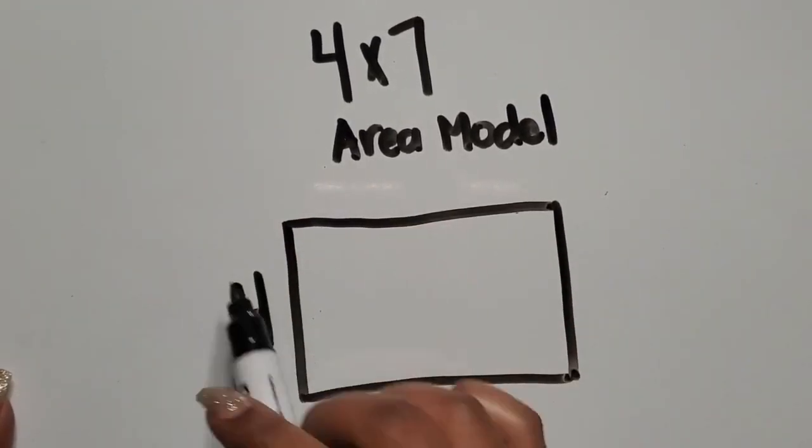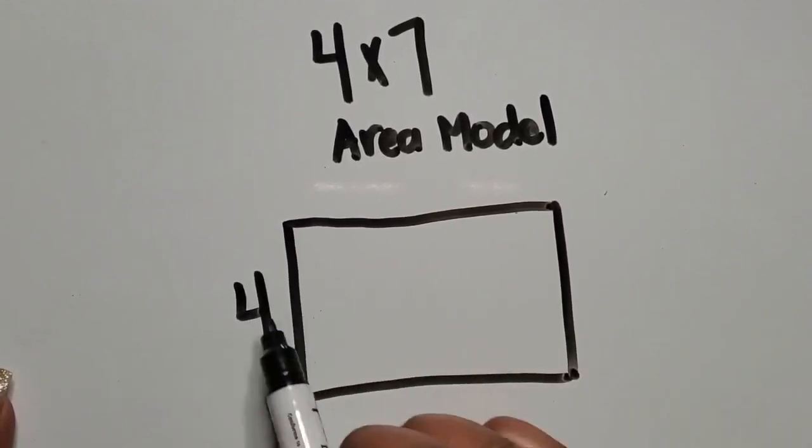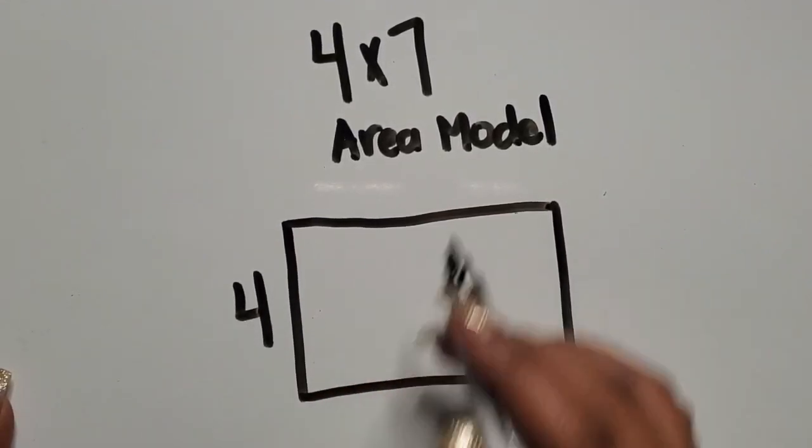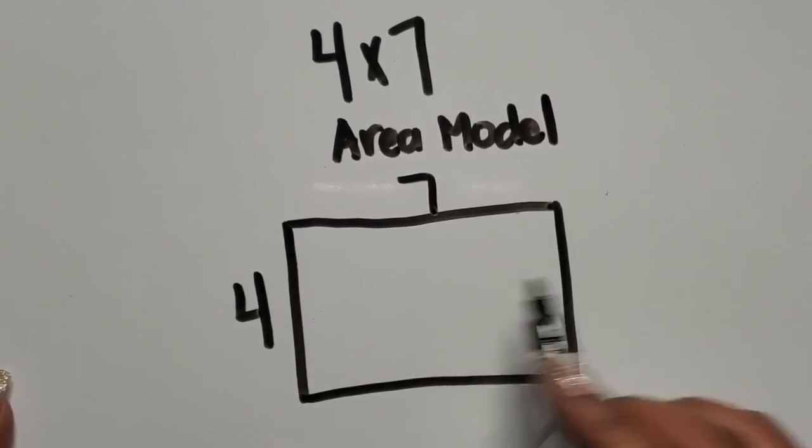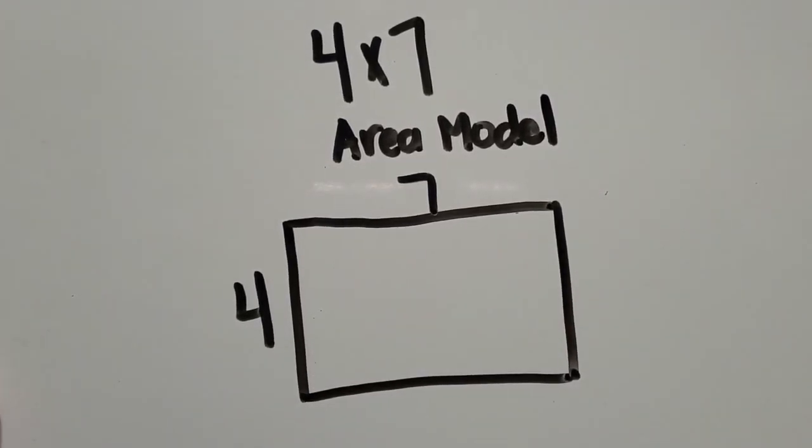I'm going to represent four rows just by writing four and then I'm going to represent seven up here to represent the number that would go in each row.